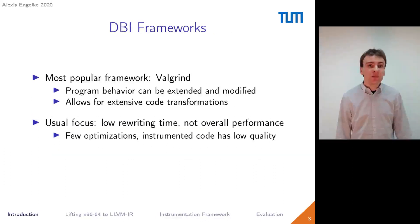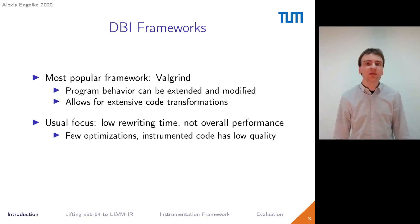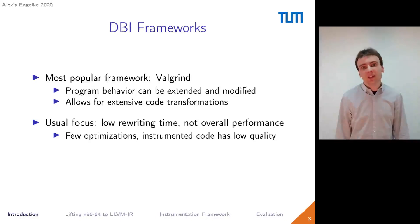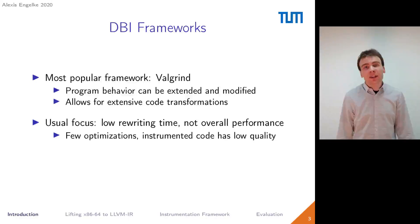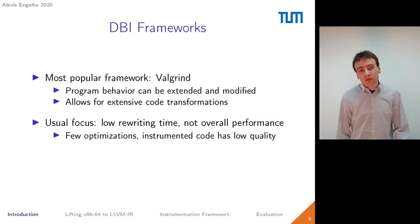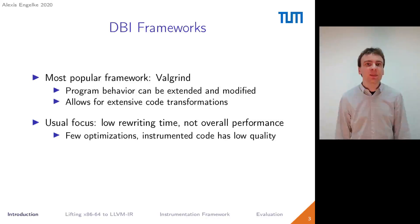The most popular DBI framework is Valgrind, which allows for extensive code transformations and modifications. The program behavior can be extended and modified in an architecture-independent code representation. The usual focus is on lower rewriting time, but not overall performance, which means that such frameworks usually perform few and lightweight optimizations that can be done fast, but the instrumented code has low quality.